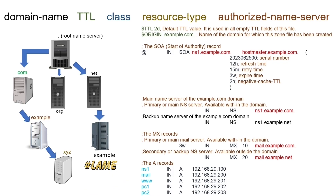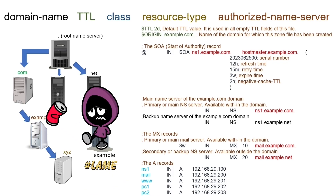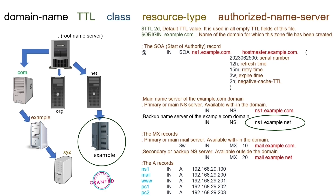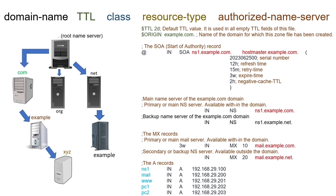A lame delegation occurs when an NS record points to a name server that is not authorized to answer for the domain. In this example, we configured a backup name server ns1.example.net. We need to configure this name server as the authoritative name server for the domain example.com. To authorize this name server for the example domain, we need to configure it as the slave name server for this domain.